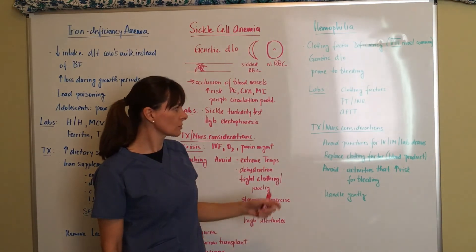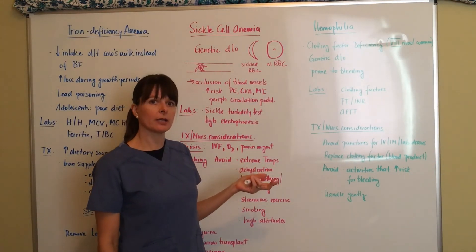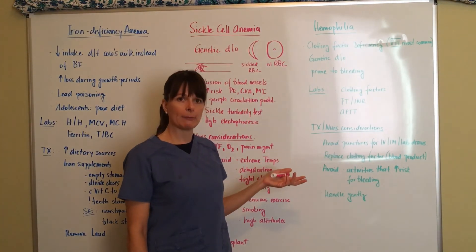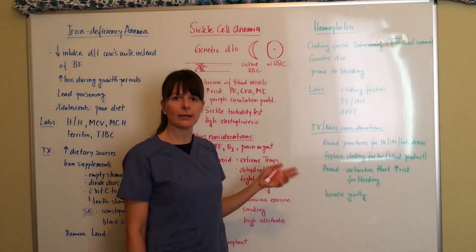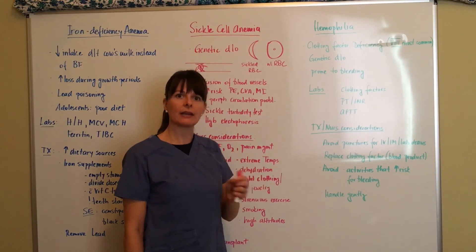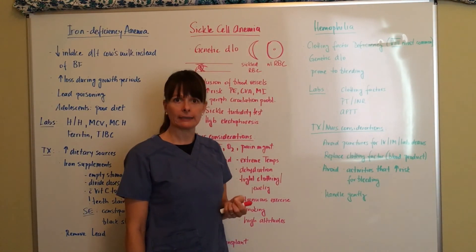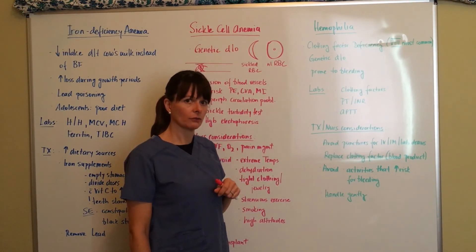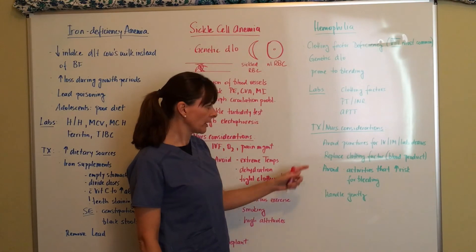Nursing considerations. When a patient with hemophilia is admitted, we want to avoid punctures for IVs, IMs and lab draws. They might need a central line where we can access this line for multiple purposes rather than puncturing the skin every time we need a drop of blood from this child, because they might not stop bleeding due to the deficiency of clotting factors.